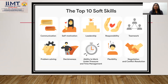Talking about the top 10 soft skills: the first one is communication — the person should know how to communicate effectively. Second is self-motivation. Third is leadership. Fourth is responsibility. Fifth is teamwork. Sixth is problem solving. Seventh is decisiveness. Eighth is the ability to work under pressure and time management. Ninth is flexibility. And the tenth is negotiation and conflict resolution.